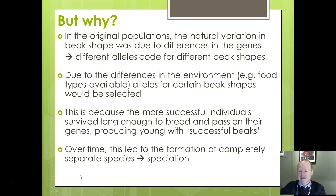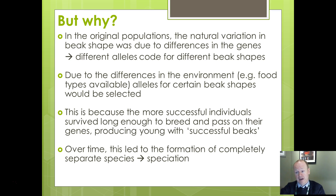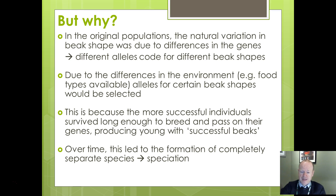There is natural variation in beak shape due to differences in alleles coding for beak shape. Due to differences in the environment — for example, different foods available on different islands — there is selection: some organisms survive because they find food and others don't. The successful individuals survive long enough to breed and pass on the genes, which also carry that particular beak type that allows them to survive. Over a period of time, this results in speciation — the formation of a separate species.